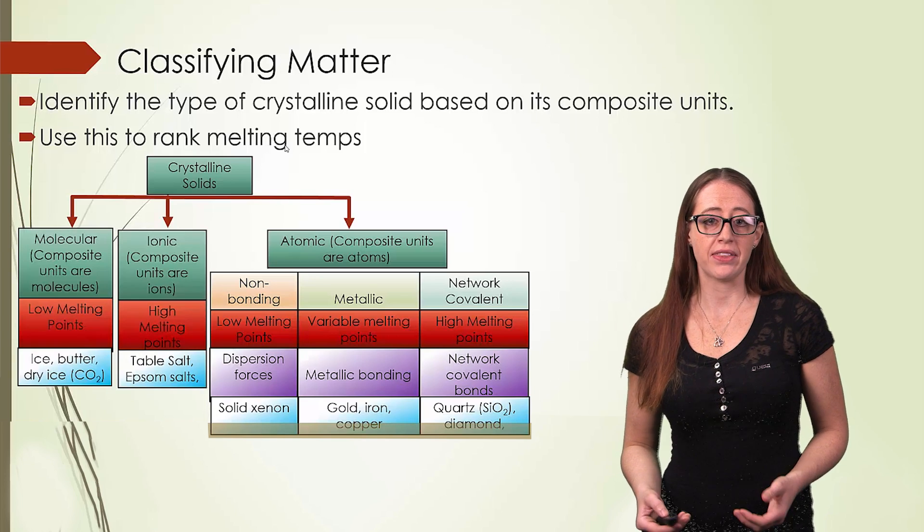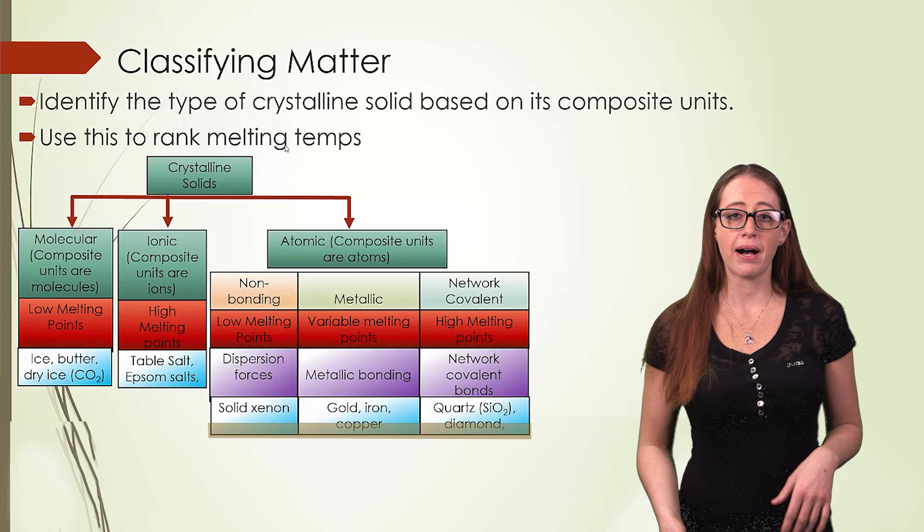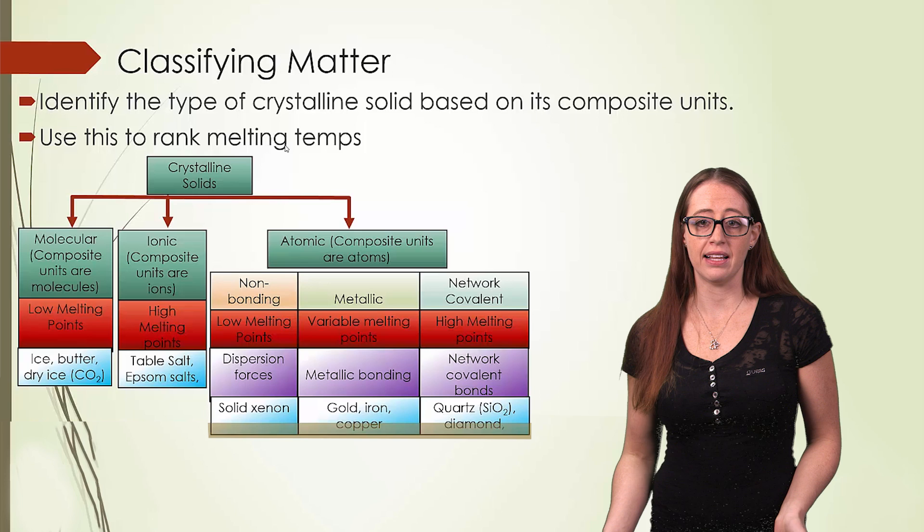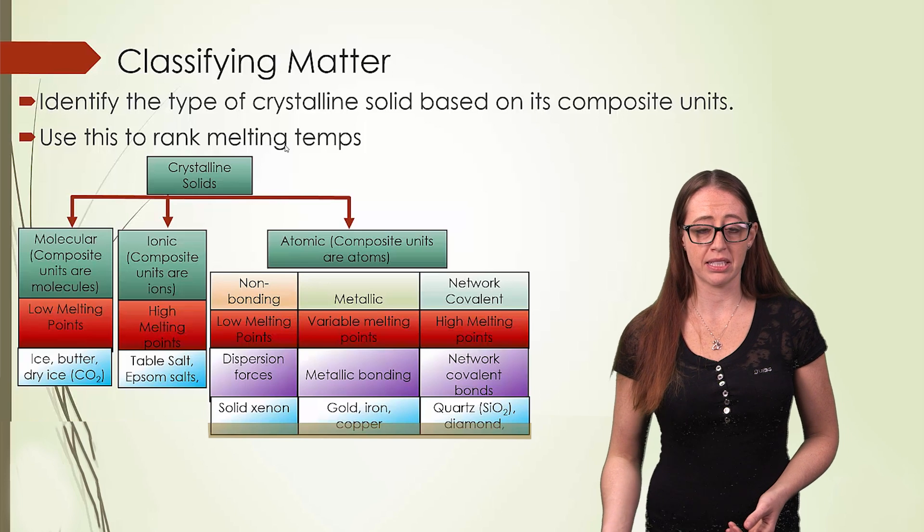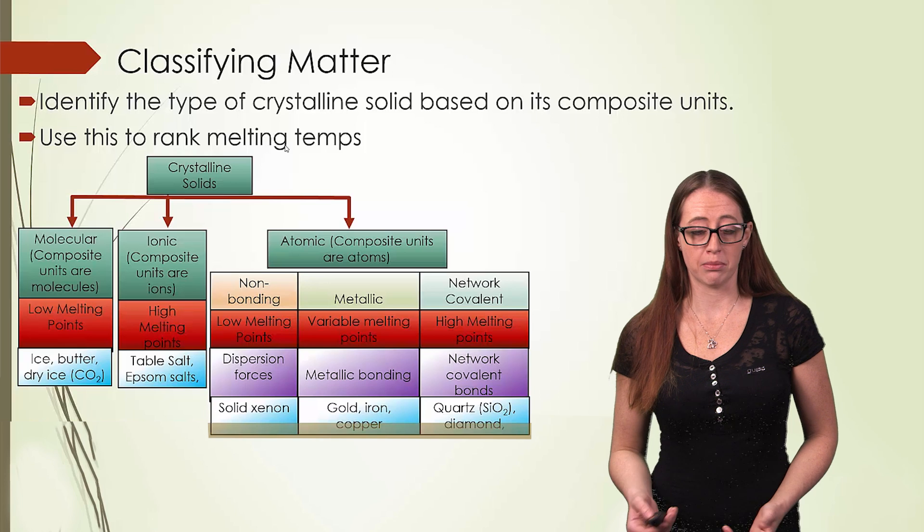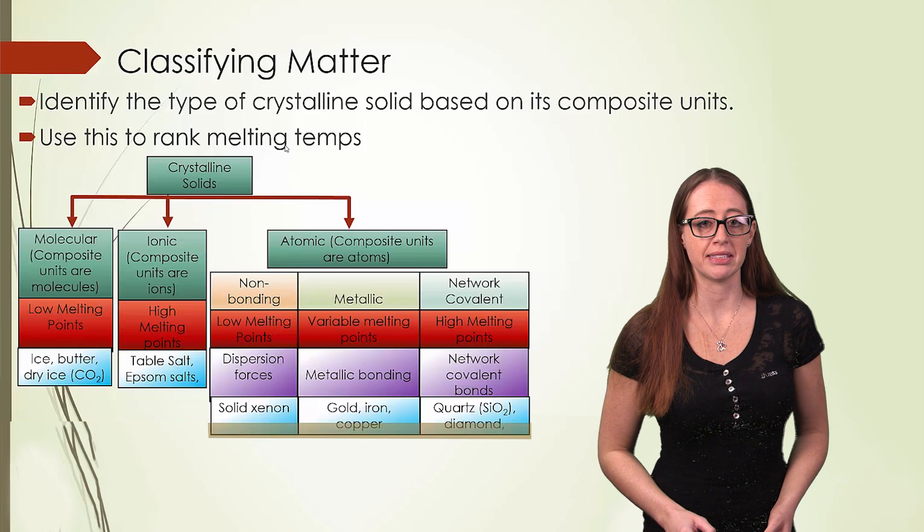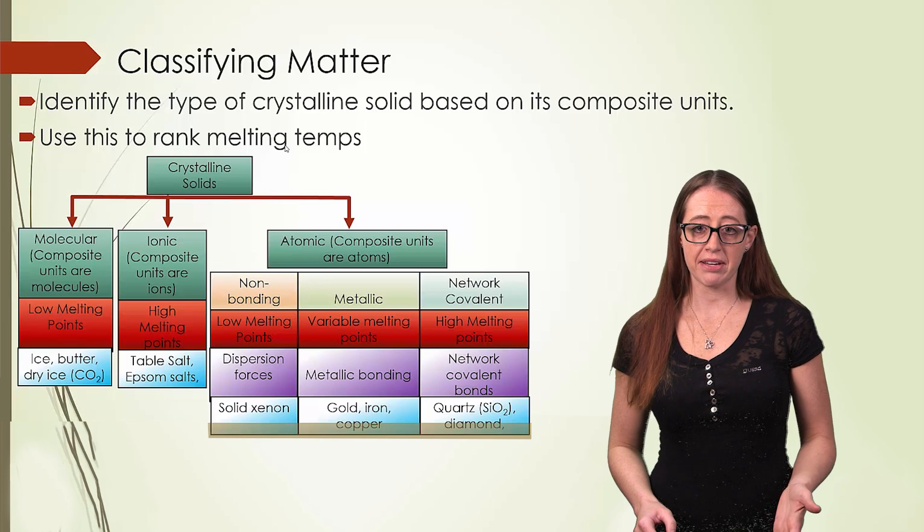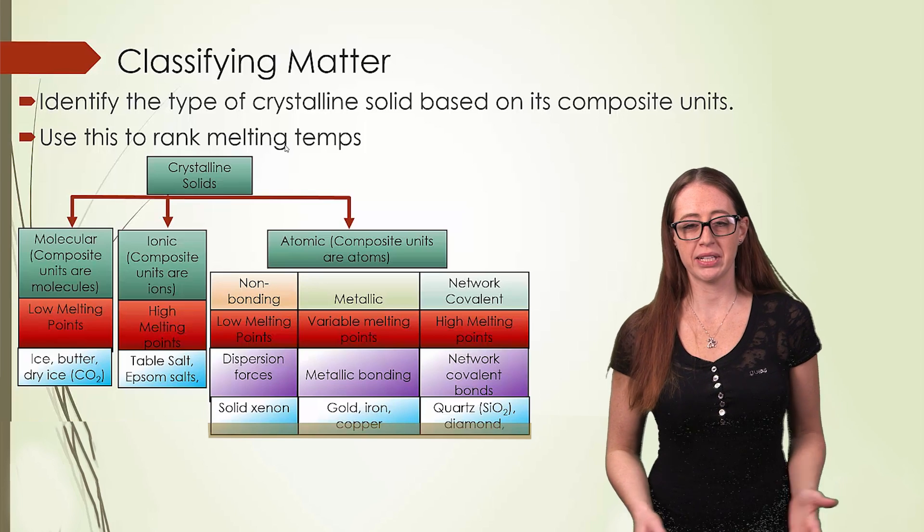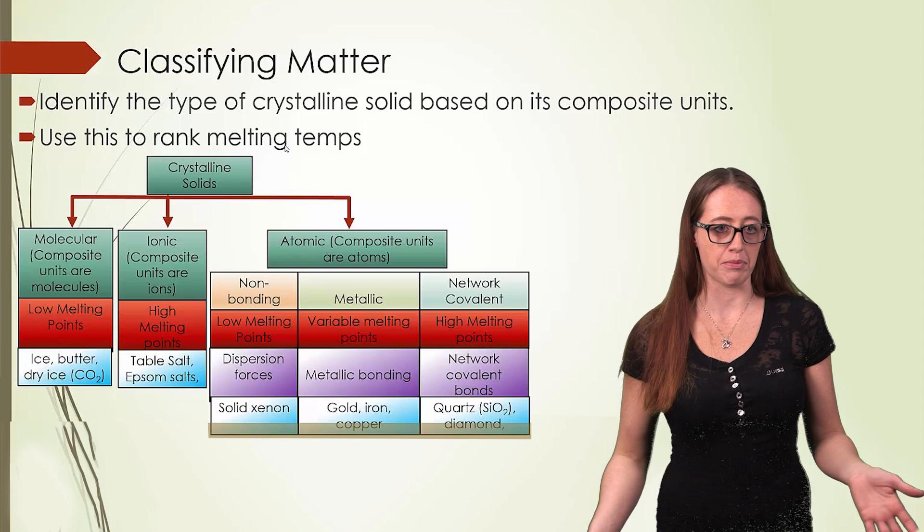You can identify the type of solid based on the composite atoms, molecules, or ions, and then use that to tell how likely the melting temperatures are to be high or low, and perhaps even rank atoms or molecules in relationship to their melting temperatures. There are definitely some situations where you might not be able to tell which is which, but we're not going to give you any strange exceptions when it comes to an exam.